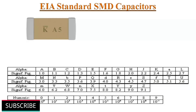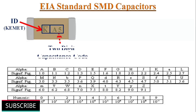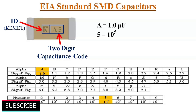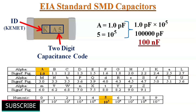If K with a small bar at top and A5 is printed on an SMD ceramic capacitor, K indicates the manufacturer ID, and A5 is the two-digit EIA standard SMD capacitor code. Here A indicates 1 picofarad and 5 indicates a multiplier of 10 to the power of 5, so it is a 100 nanofarad capacitor.